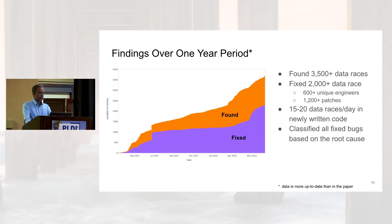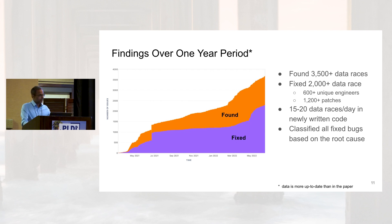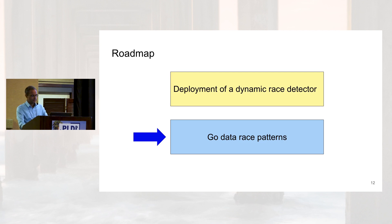This system has been functional for over a year, starting from March 2021. We thought initially we would find a few data races. We found not one, not 10, not 100, not 1,000 — about 3,500 data races in this one year. Our developers fixed more than 2,000 of these data races, about 600 unique engineers were involved, and about 1,200 patches were delivered. Worse yet, every day in newly generated code we continue to find 10 to 20 new data races.